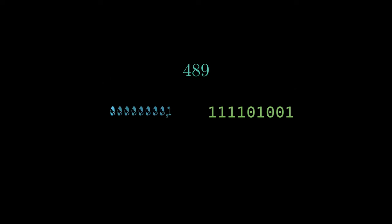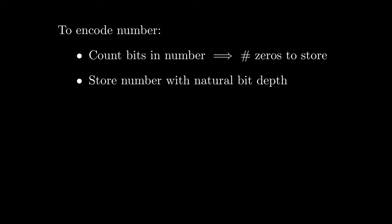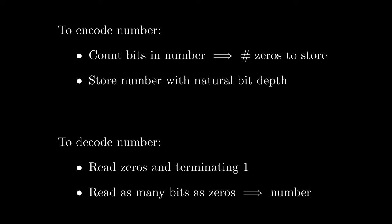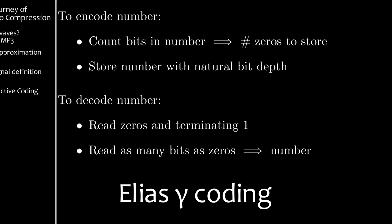Getting back to the encoding, we can then place the number itself after that. Except all numbers start with a one in binary, so we don't need to store that one again. The unary encoded bit depth can then be thought of as the highest power of two in the number. So, to encode, count the bits in the number and store that many zeros. Then, store the number itself starting with the highest one bit. To decode, read zeros until you hit a one, then keep reading afterwards as many bits as there were zeros. The decoded number is the second half as well as the leading one. This encoding scheme is known as Elias Gamma Coding and it's already great.